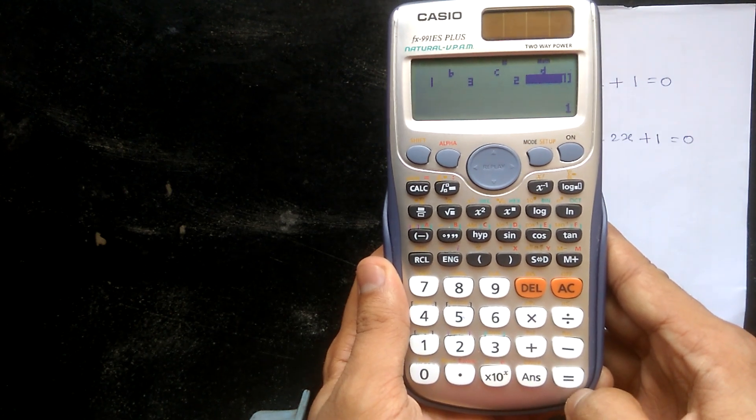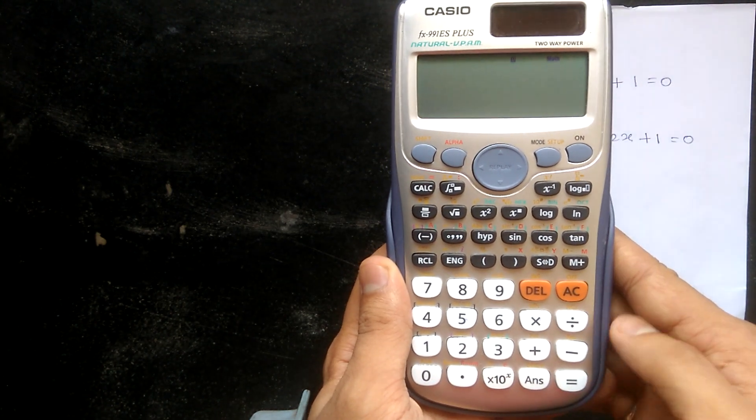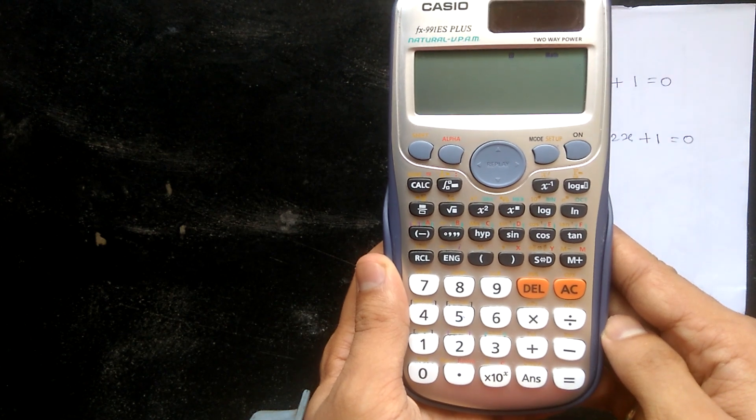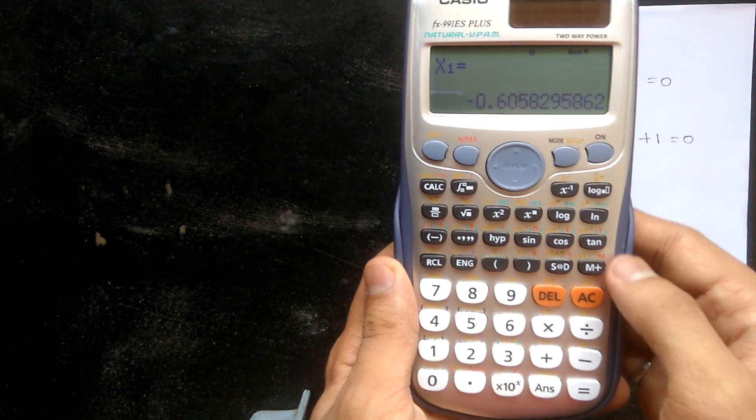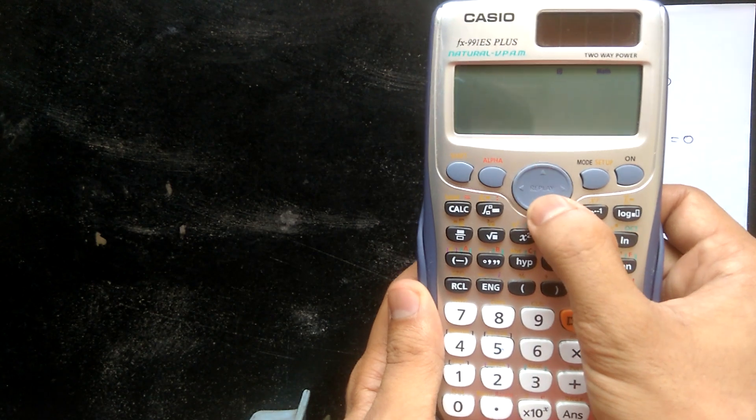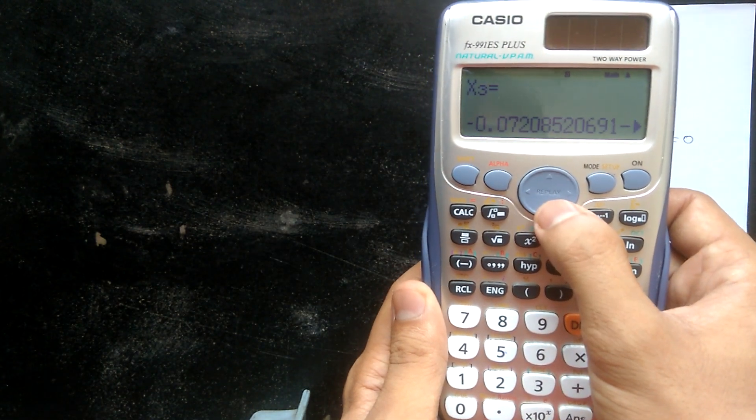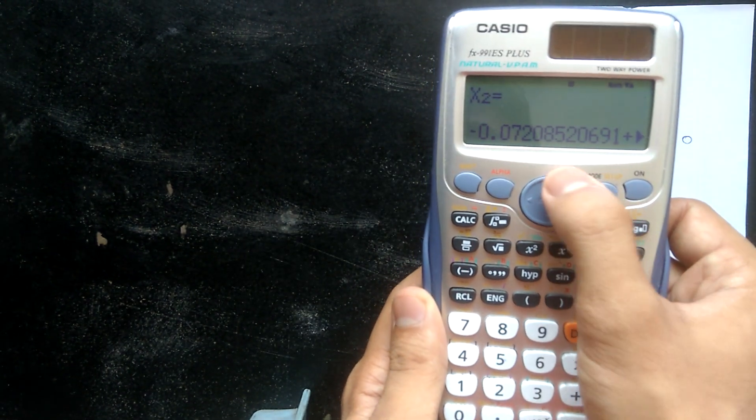Then I have to press the equal to button to get the answer. Sometimes we get three values as x1, x2, and x3. So I have the values of